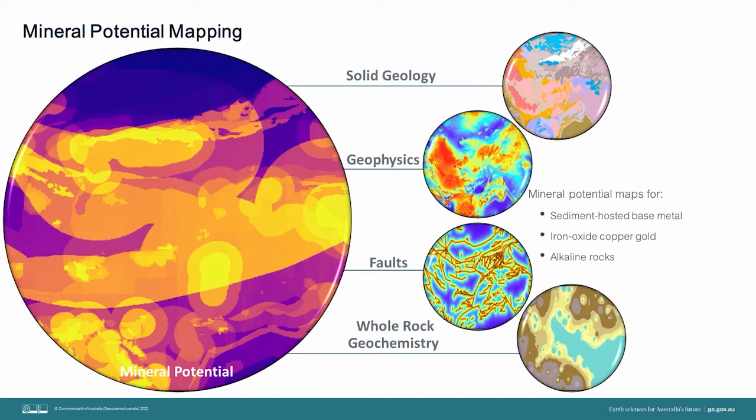The current focus at Geoscience Australia is to build on work undertaken as part of the Critical Minerals Mapping Initiative to map the potential for sediment-hosted mineral systems across Australia, the United States and Canada. We're currently working on evaluating the potential for sediment-hosted base metal mineral systems using both the understanding of these systems at a global scale, but also a specific understanding of these systems within Australia. Future work will involve mapping the mineral potential for iron oxide copper gold and alkaline rock mineral systems across Australia.